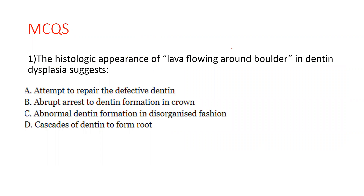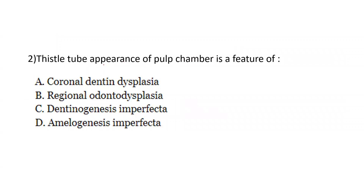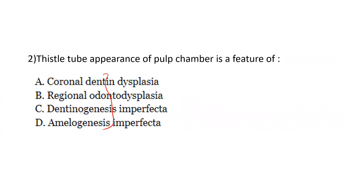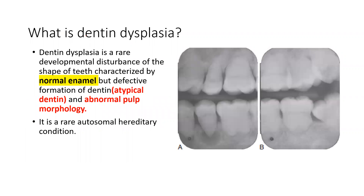The histological appearance of lava flowing around boulders suggests what? And the thistle tube appearance of the pulp chamber is the feature of which of the following? Now that we have an idea of the questions, let us get into the theory. Dentin dysplasia is a rare developmental disturbance of the shape of the teeth which is characterized by normal enamel, abnormal dentin, and abnormal pulpal morphology. It is a rare autosomal dominant hereditary condition.